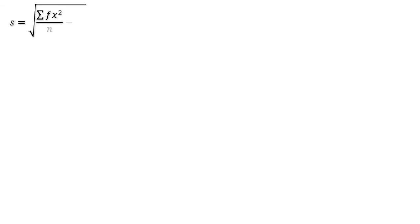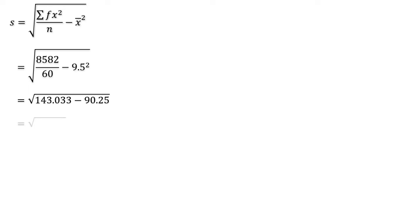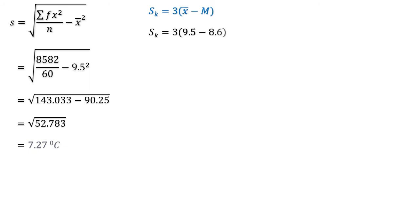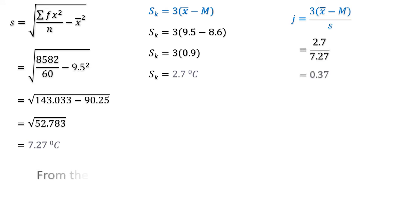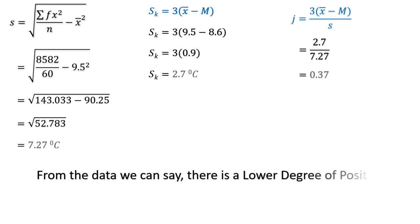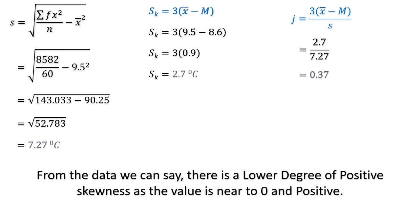For standard deviation: SD = √(Σfx²/n − x̄²) = √(8582/60 − 9.5²). The division is 143.03, the square of x̄ is 90.25, the difference is 52.78, and the square root gives SD = 7.27 degrees Celsius. Skewness = 3 × (x̄ − M) = 3 × (9.5 − 8.6) = 3 × 0.9 = 2.7 degrees Celsius. Coefficient of skewness = 2.7 / 7.27 = 0.37 — a lower degree of positive skewness, as the value is near to zero and positive.